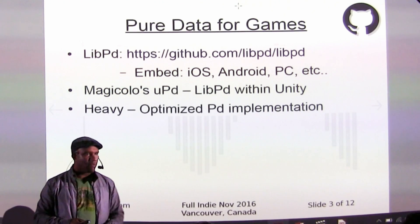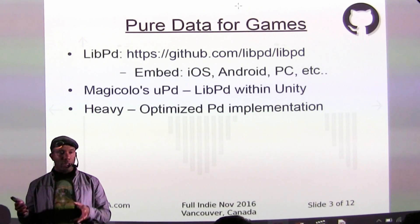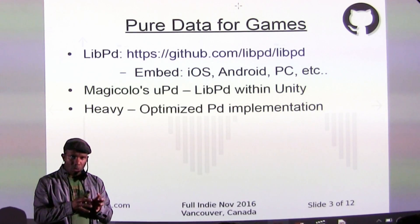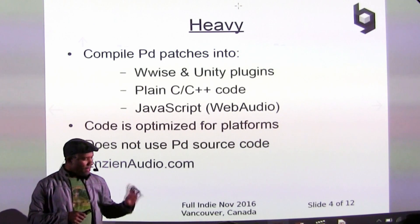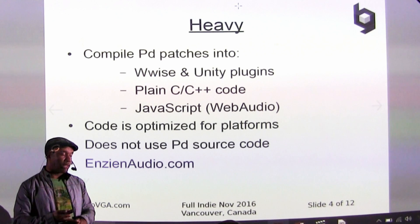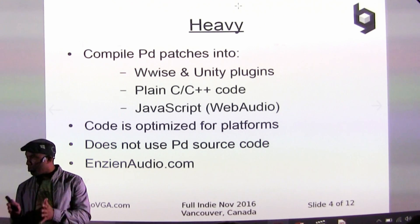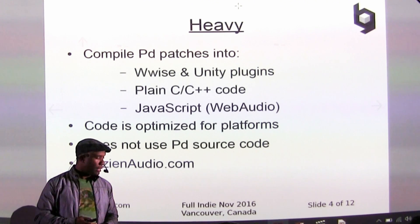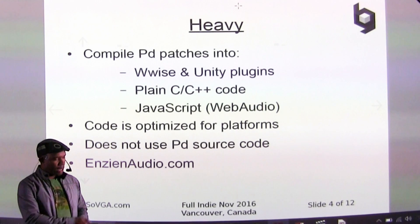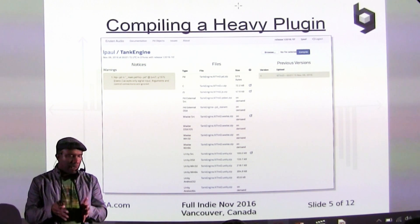The thing I'll be talking about a lot is Heavy. If you want performance, you use libraries that encapsulate and compile down for performance — similar to taking Python and compiling to C++. Heavy takes Pure Data code and compiles it into Wwise plugins, Unity plugins, or actual C++. Another cool thing is you can run it online: it converts your Pure Data code to JavaScript so you can put it on a web page. It's optimized for all platforms, using its own code rather than running the PD engine directly. There's a website to try it out — you just upload your patch and it spits out C++ code.